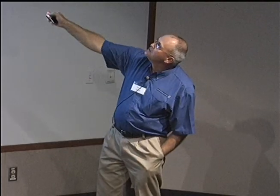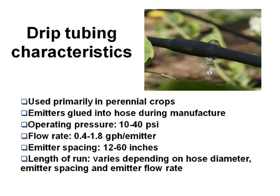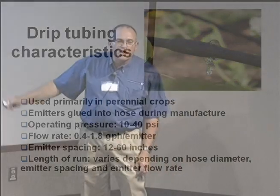Now the drip tube — here's that emitter, see it in there? It's actually glued into the hose. This is excellent for perennial crops: berries, brambles, blueberries. There are folks using these in orchards, even on pecans, subsurface. The operating pressure is a little higher and the wall is a little thicker. Emitter spacing runs 12 to 60 inches, which makes it really good for brambles, cane berries, and blueberries. You leave it in the field because they're perennial crops.